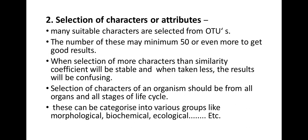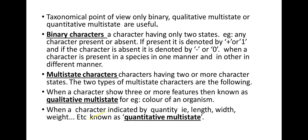When more characters are selected, the similarity coefficient will be stable; when fewer are taken, the results will be confusing. Character selection should cover all organs and all stages of the life cycle, and can be categorized into morphological, biochemical, and ecological groups. From a taxonomic point of view, only binary, qualitative multi-state, or quantitative multi-state characters are useful. Binary characters have only two states — present (+1) or absent (0). Multi-state characters have two or more states: qualitative multi-state refers to features like color, while quantitative multi-state refers to measurable features like length, width, and weight.